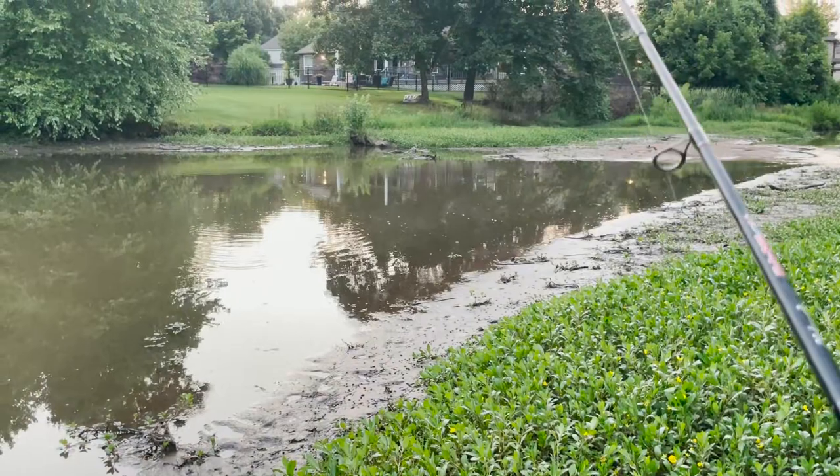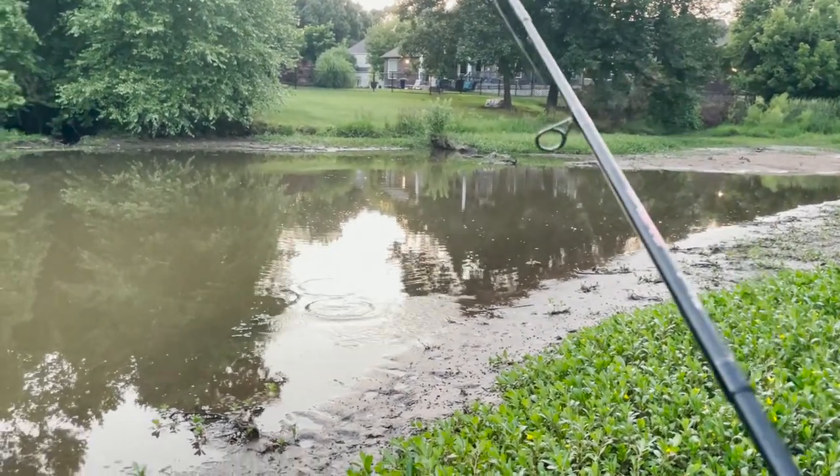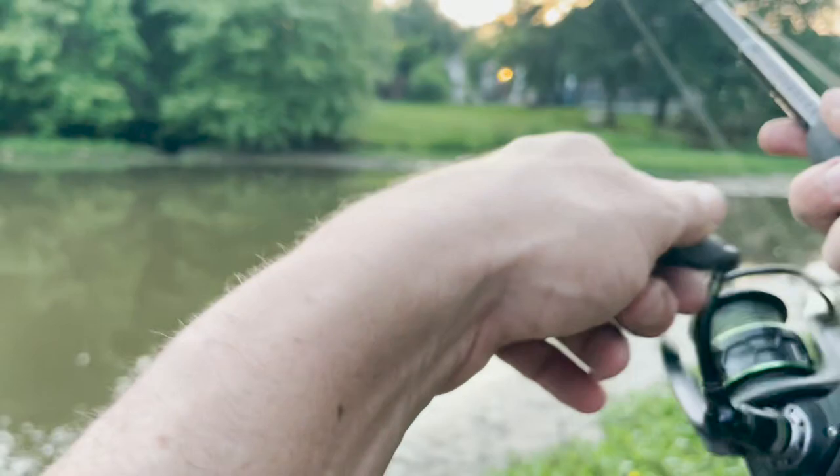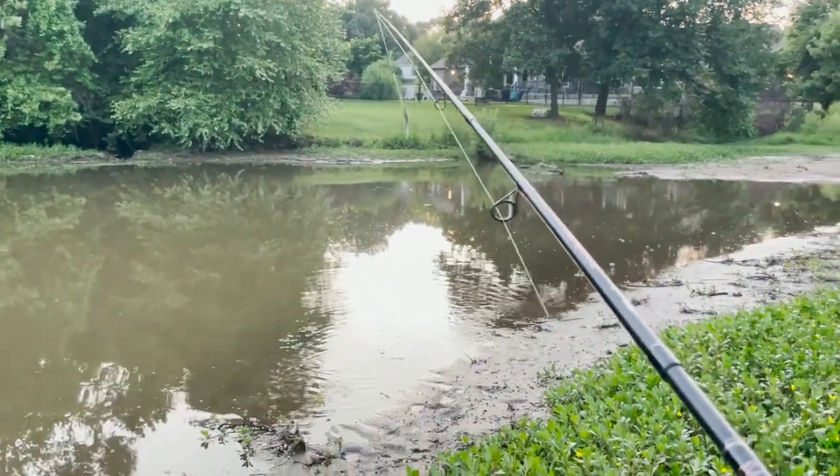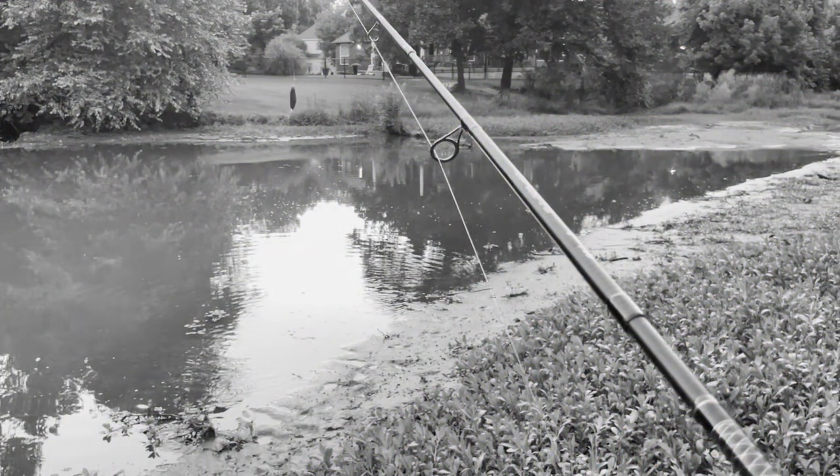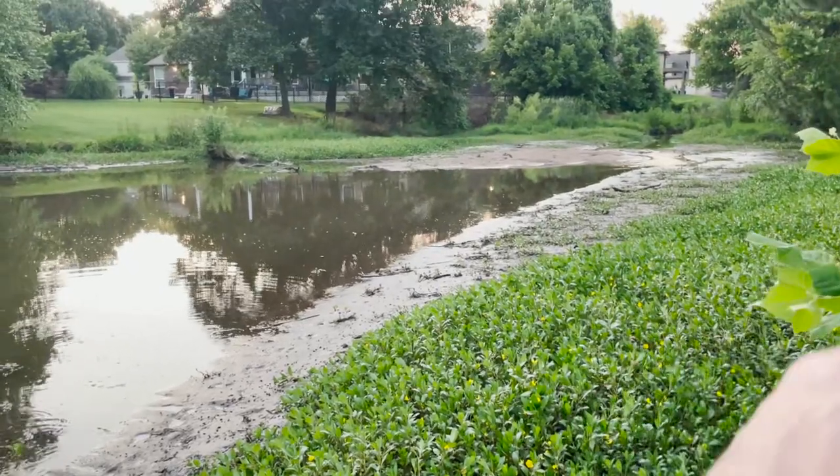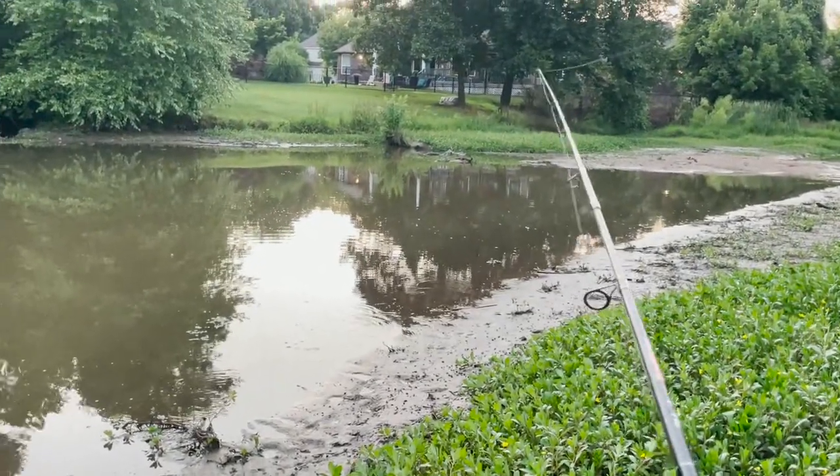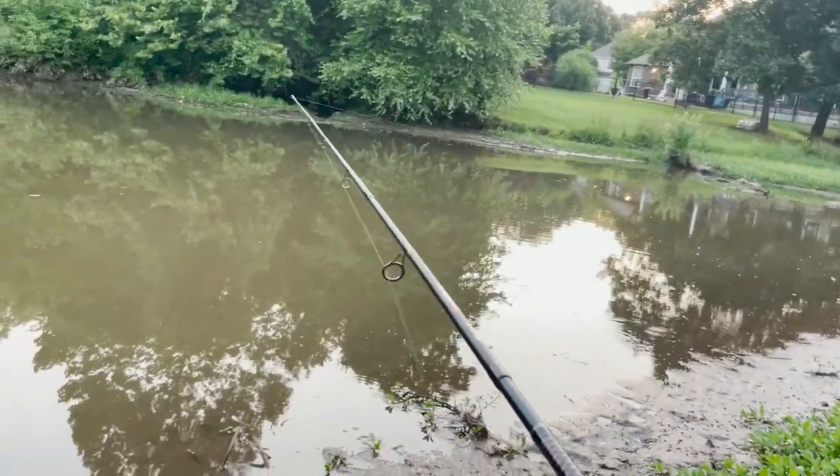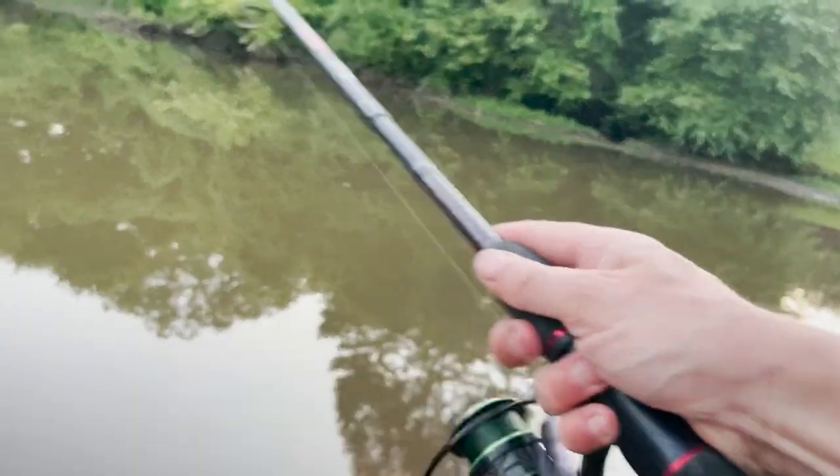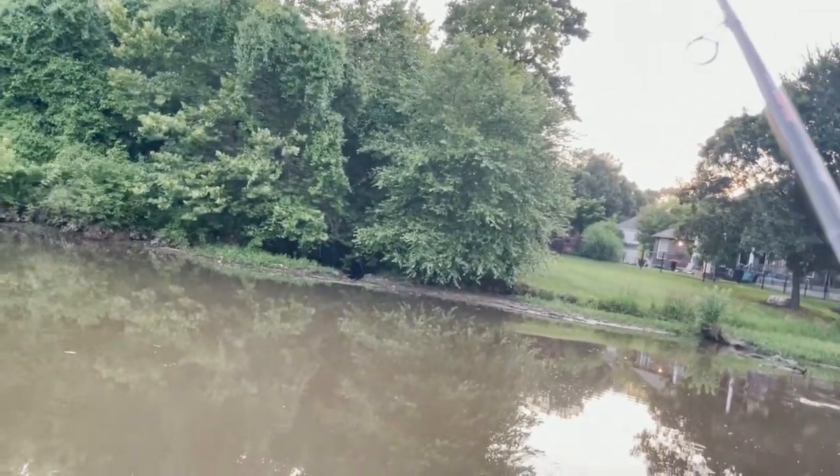This back part of the pond isn't fished much, I think because it's hard to reach and it looks pretty shallow, but I pulled a two-pound bass out of here just the other day. It's hard to see, so here's what happens: I throw the lure over towards the shore right about there, and as I pull it in, I get a strike. Yeah, I caught one. That's a nice one.